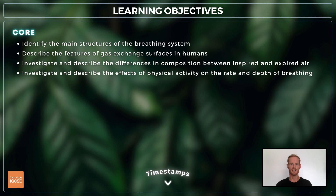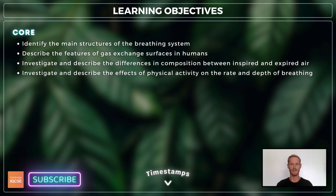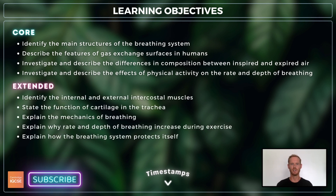For topic 11.1, you need to identify the structures of the respiratory system, describe the features of gas exchange surfaces, investigate the differences between inspired and expired air, and investigate the effects of physical activity on rate and depth of breathing. For extended, you also need to explain the role of the respiratory muscles in breathing, the effects of physical activity on rate and depth of breathing, and the ways in which the respiratory system protects itself from pathogens and particles.